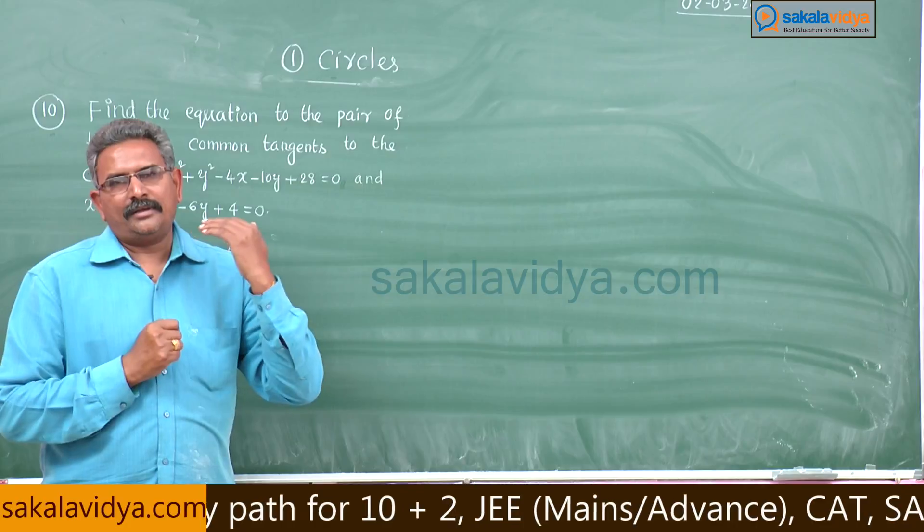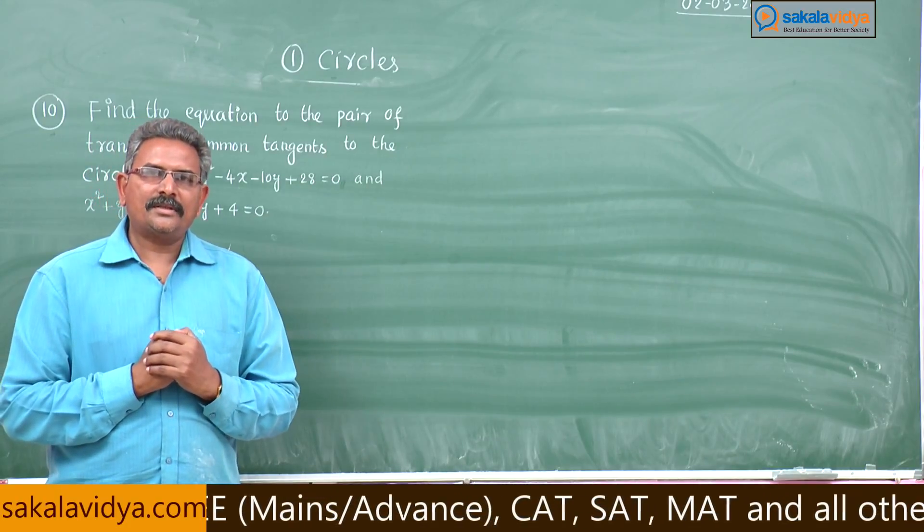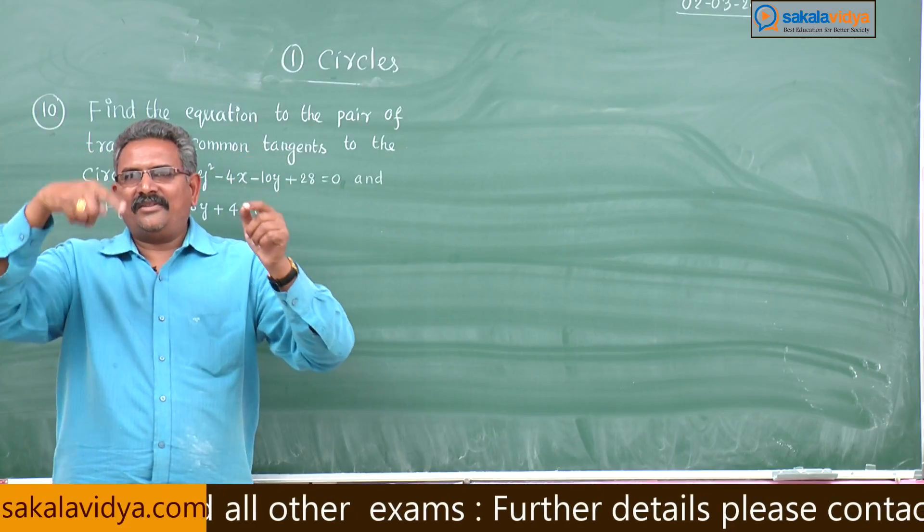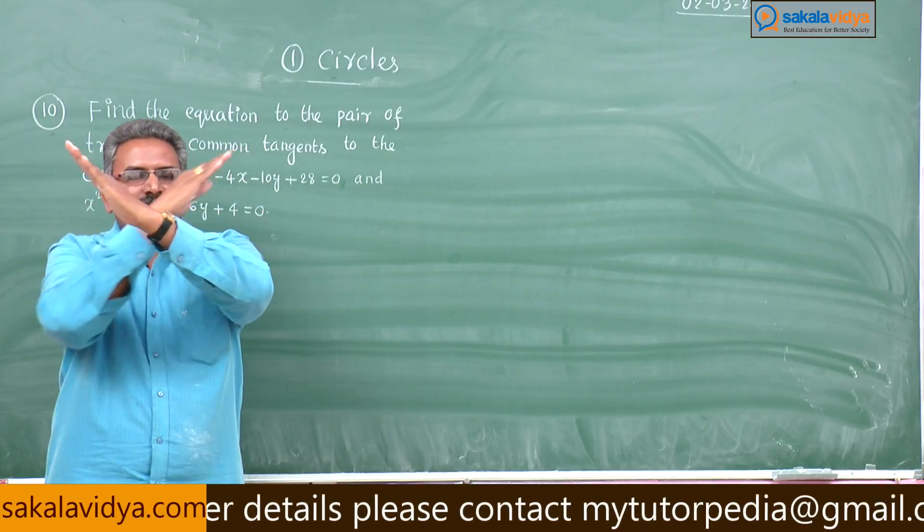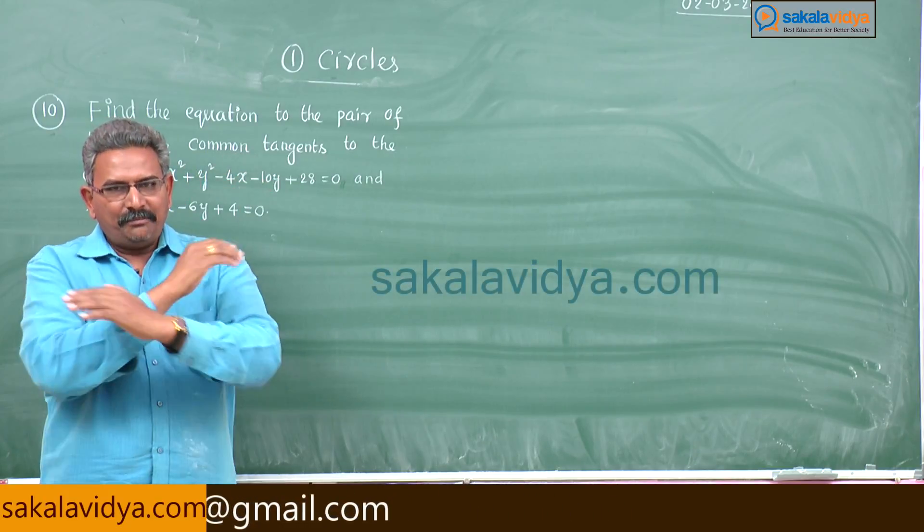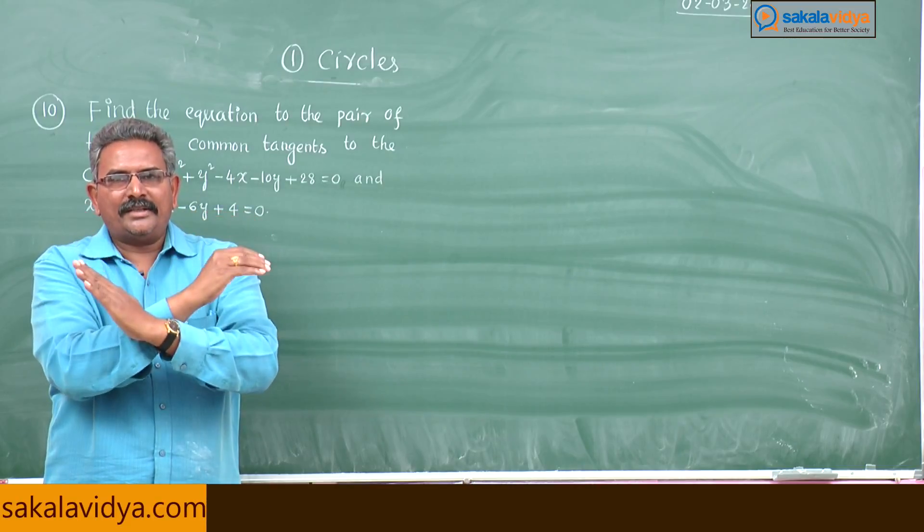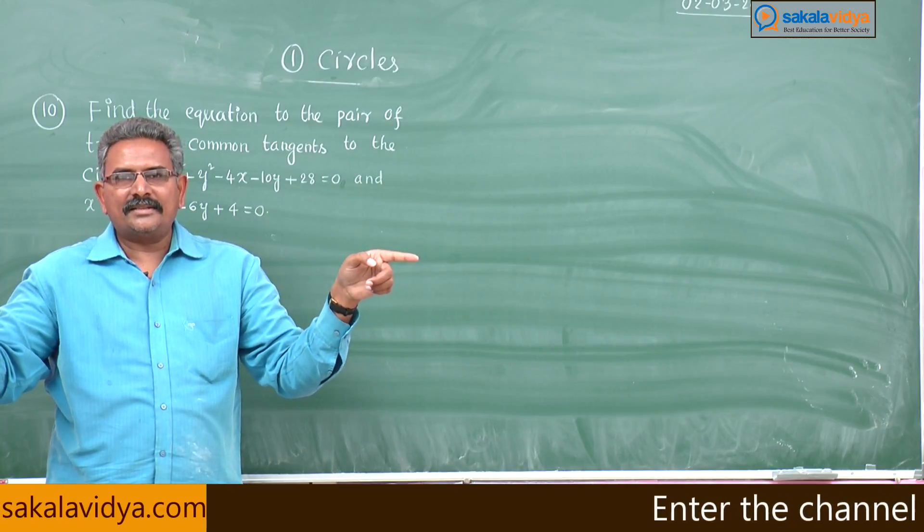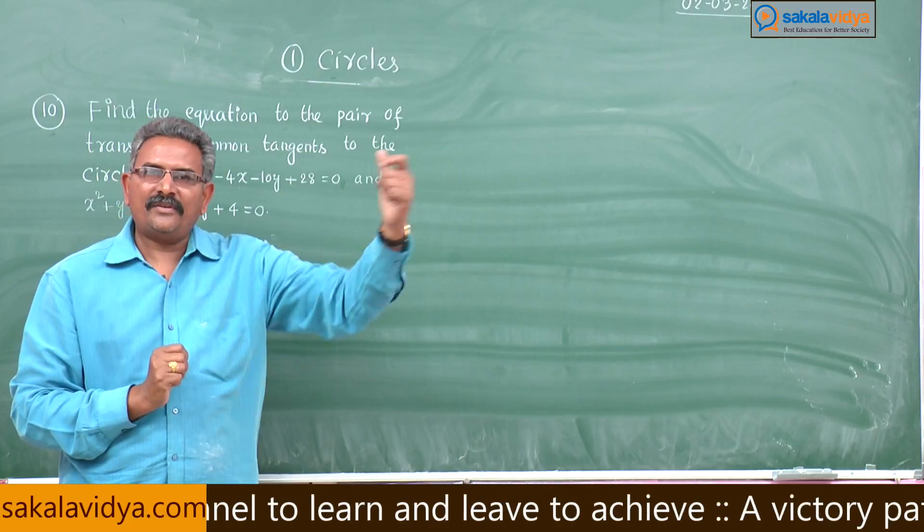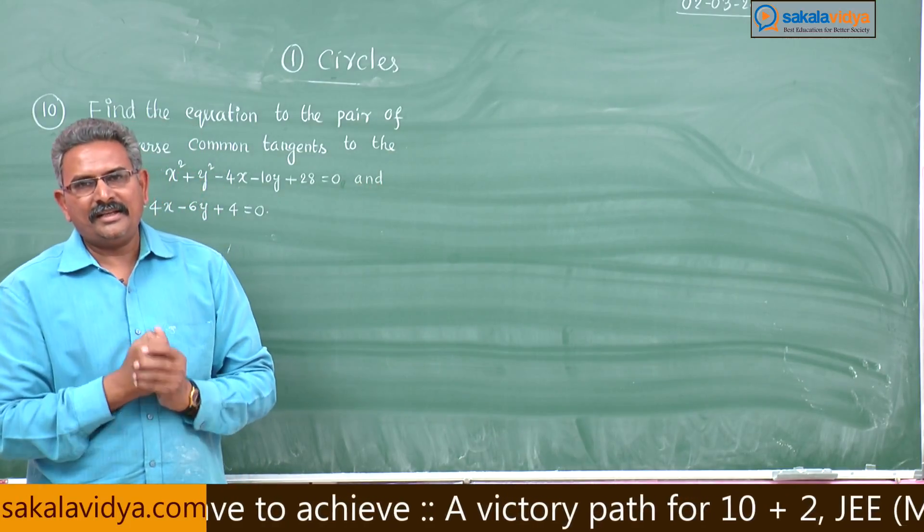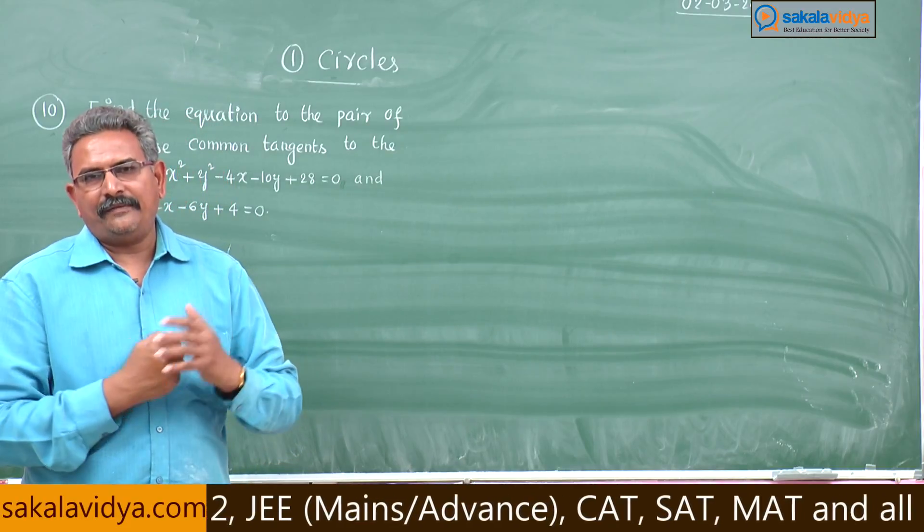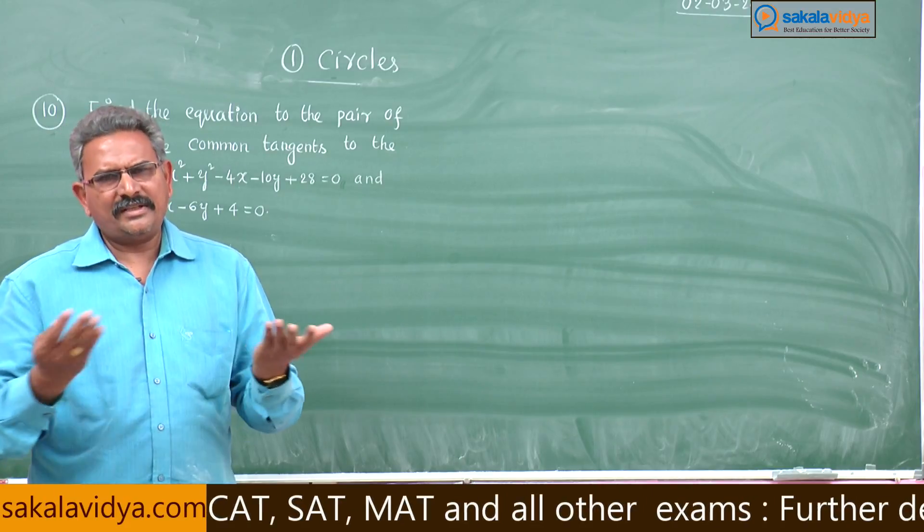In order to find out the equation to the transverse common tangents, I already told you transverse common tangents are like this: one circle is here, other circle will be here, the two tangents are like this. Now the two tangents meet at this point. This point is known as internal center of similitude. That means, indirectly the internal center of similitude is the point which divides the line joining the centers in the ratio R₁ is to R₂ internally. In the case of direct common tangent, we used external center of similitude. But here internal center of similitude we have to find out. After that, the same method we applied for direct common tangents, the same method we can adopt here also. That is very simple.